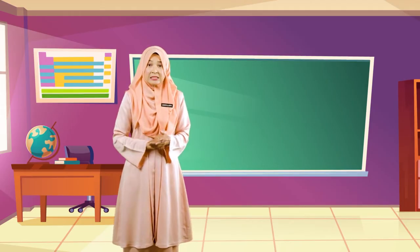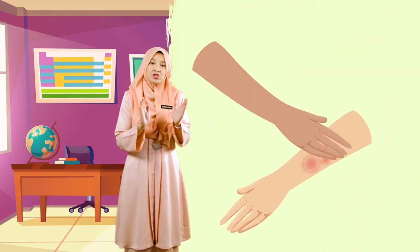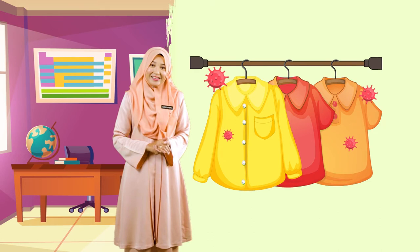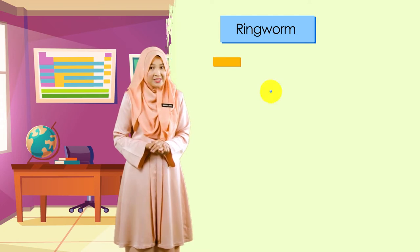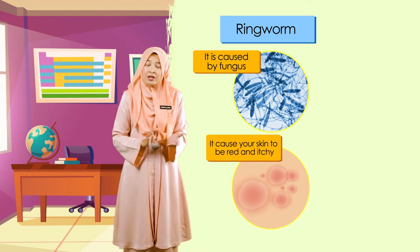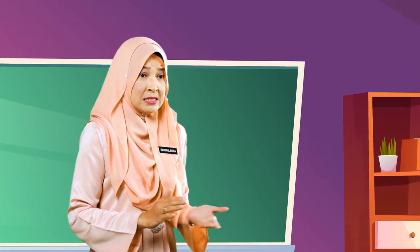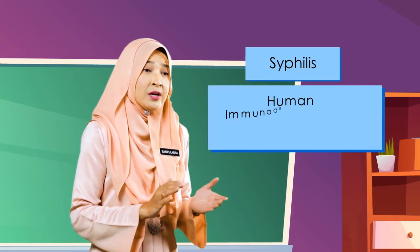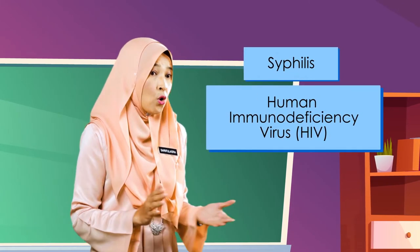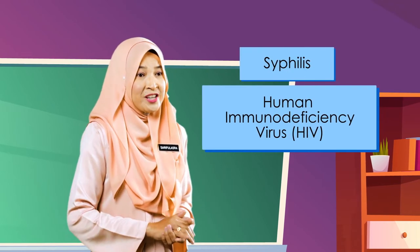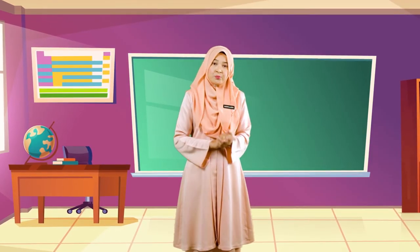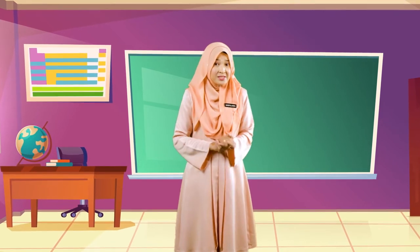Some diseases such as ringworm can be transmitted by touching the infected areas or sharing clothes of the infected person. Ringworm is the most common skin infection caused by fungus — it is usually red and itchy. Some diseases such as syphilis and the human immunodeficiency virus, or HIV, can be transmitted through sexual intercourse and blood transfer. We should practice good hygiene and a healthy lifestyle to protect ourselves from diseases.